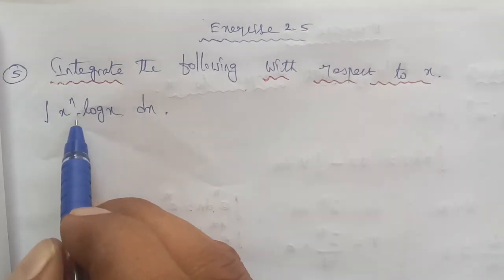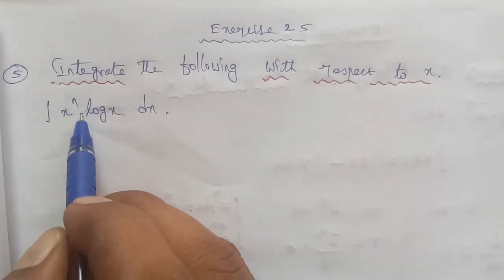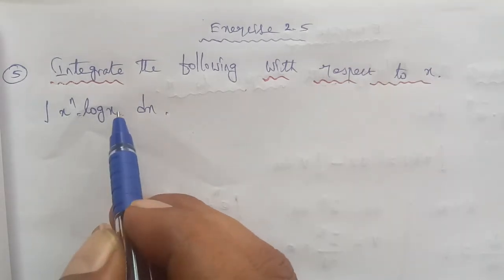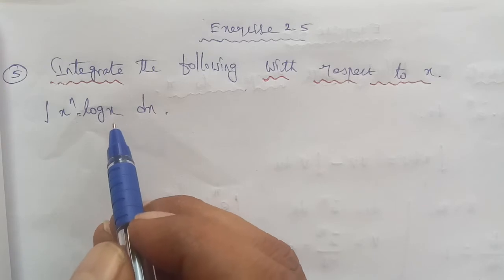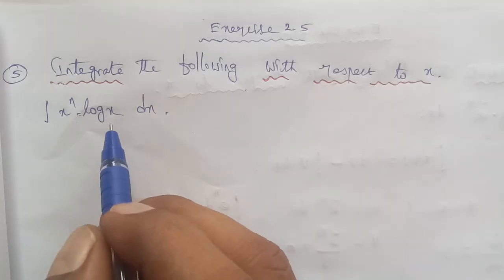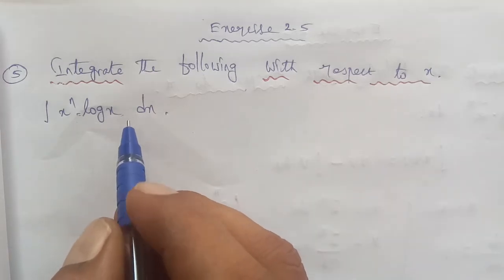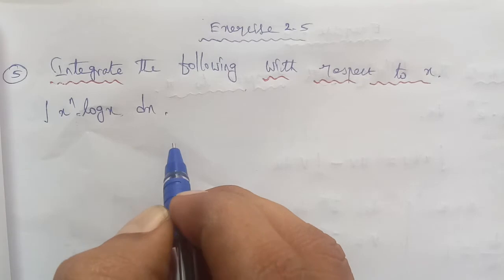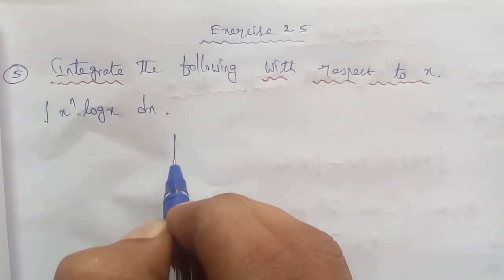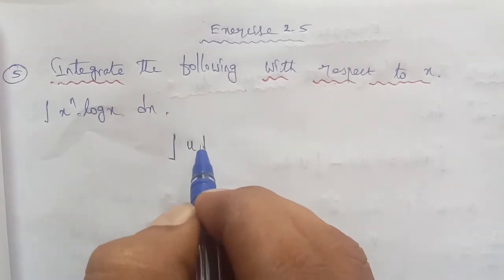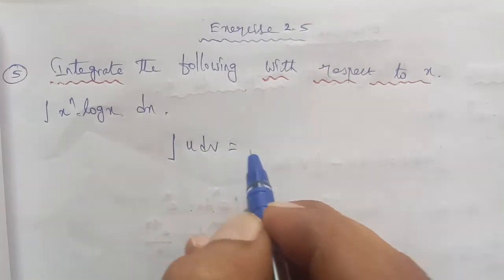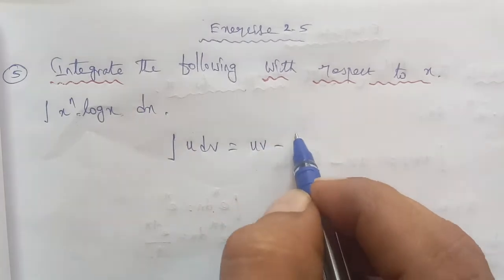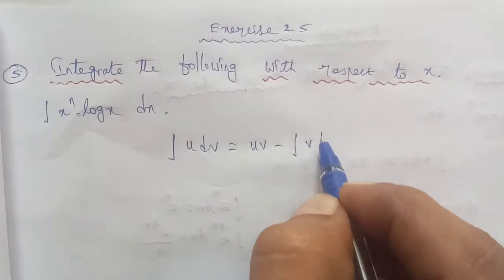So in the given question, x and log x are in the form of a product, so direct integration is not possible. To integrate this, we need to use the integration by parts formula. The formula is: integration of u dv is equal to uv minus integration of v du.